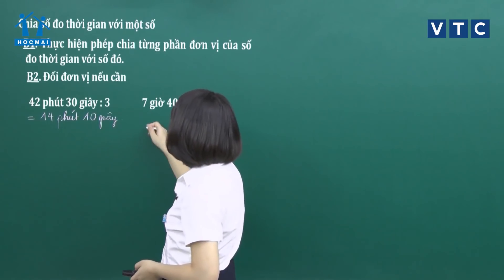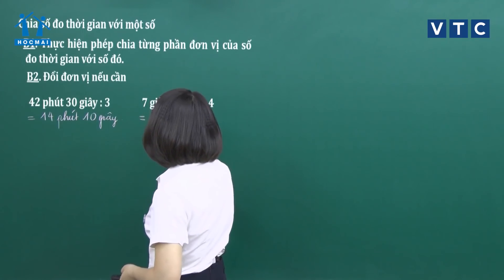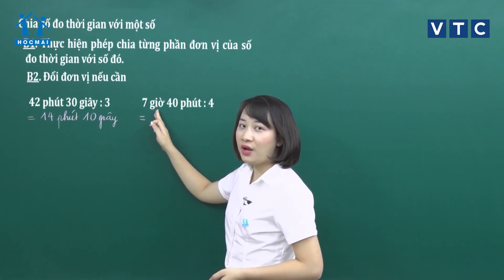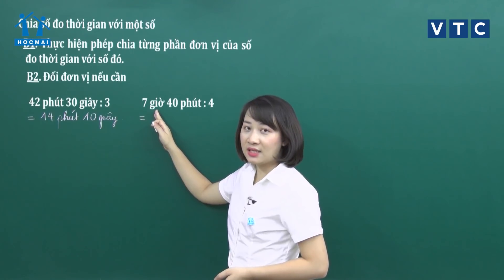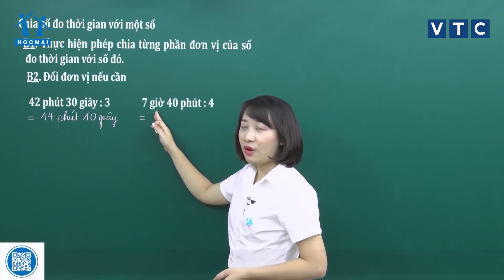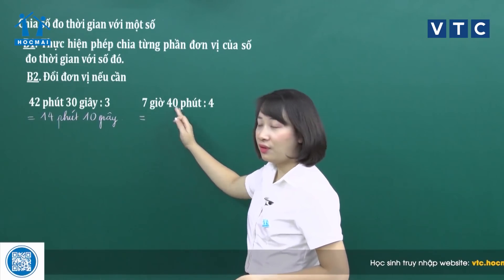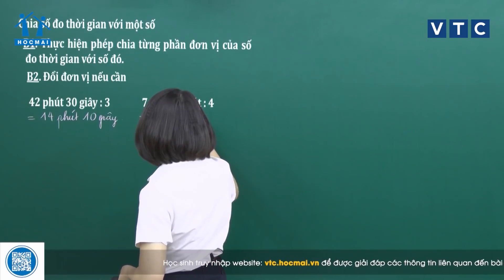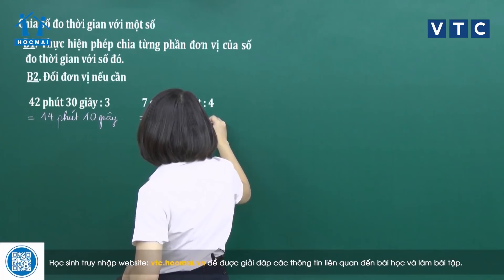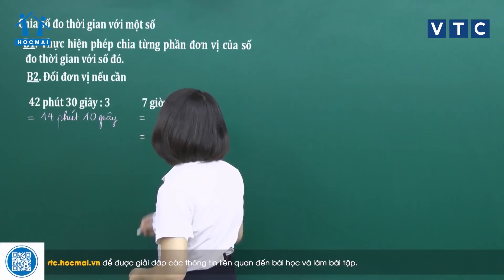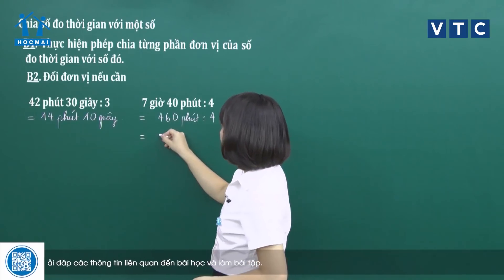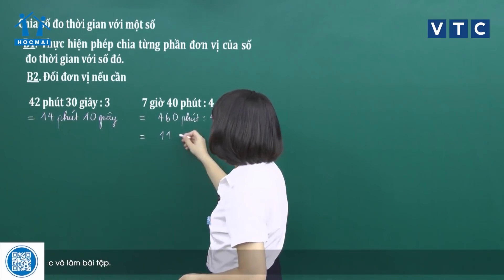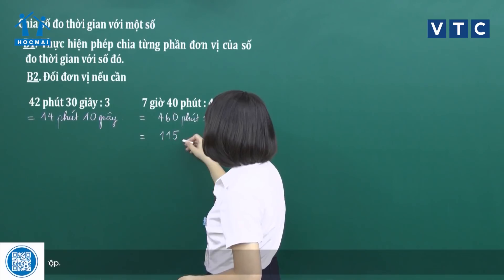Vì 7 không chia hết cho 4, cô sẽ đổi toàn bộ số đo thời gian này sang đơn vị phút. 1 giờ là 60 phút, vậy 7 giờ là 420 phút. 420 phút cộng với 40 phút thì được 460 phút. 460 phút chia cho 4: 4 chia 4 được 1, 6 chia 4 được 1 dư 2, 20 chia 4 bằng 5 — kết quả là 115 phút.